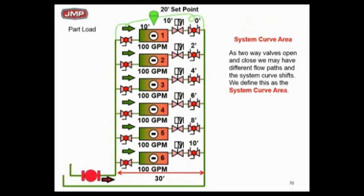Here's a direct return system. I've got a pump, and you can see I've got six zones, two-way valves, 600 GPM total. Now, there are many different system curve areas here, many different places to shift at part load.